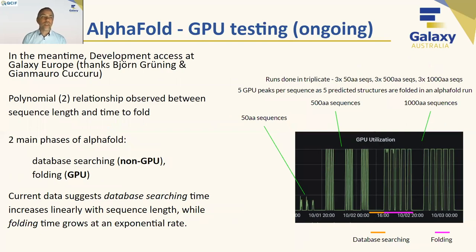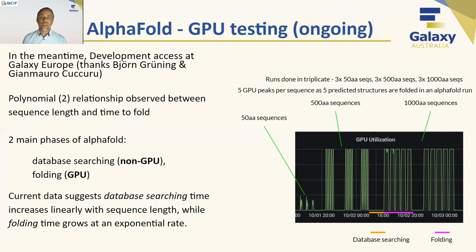Testing is ongoing. As we deploy instances onto commercial cloud, we've been in parallel getting access — thanks to Galaxy Europe, particularly Björn and John Morrow — to a GPU instance in Galaxy Europe for development of this tool in the Galaxy framework. We've noted a clear relationship between query length and time for tool completion, both in the database searching for similar sequences and in the folding steps. Shown on the right is data looking at multiple sequences of 50, 500, and 1000 amino acids, examining both database searching time and folding time alongside GPU utilisation.